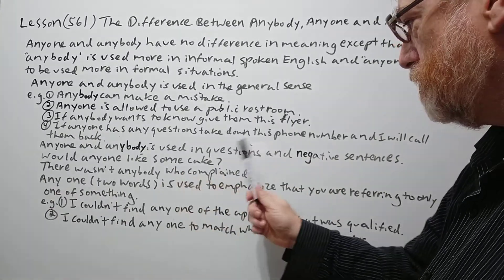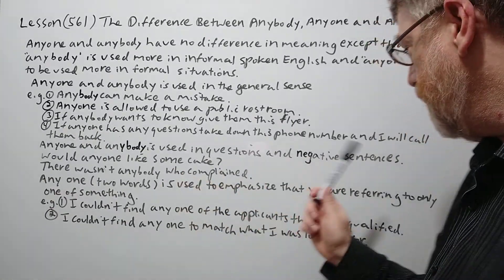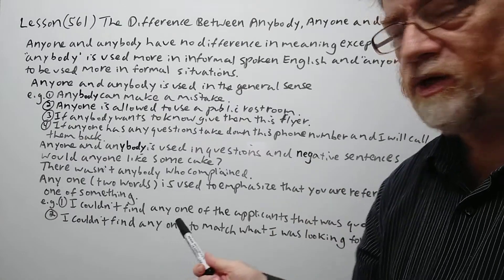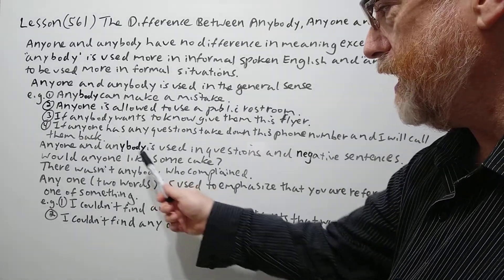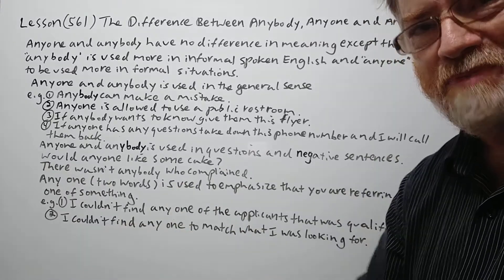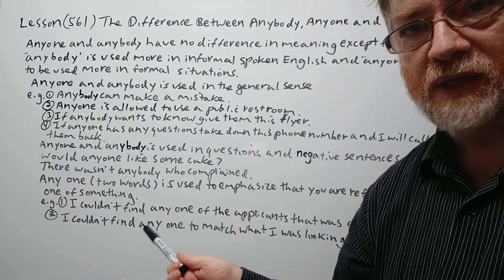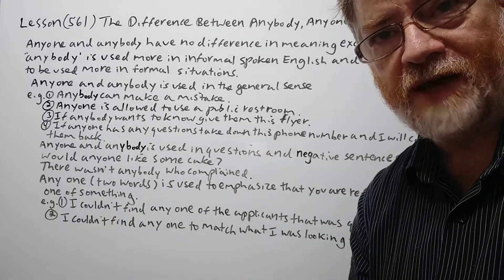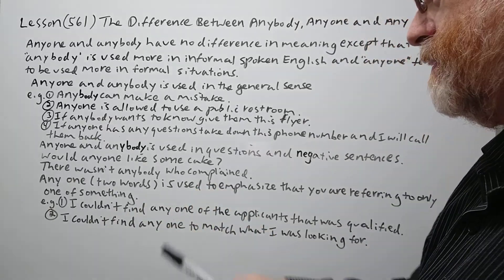Anyone and anybody is also used in questions and negative sentences. Would anyone like some cake? Like especially if there's a group of people there, they're coming out with a big cake and you're saying would anyone like some, I can cut you a piece of cake for dessert.